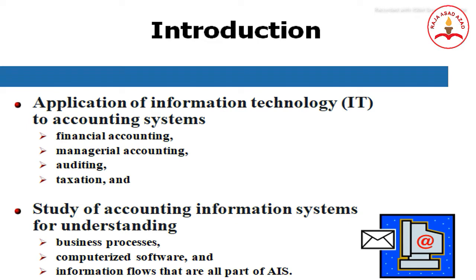The accounting information system summarizes data available to decision makers. By processing data, it influences organizational decisions at the lower, middle, and top levels of management. Applications of information technology to accounting include financial accounting, managerial accounting, auditing, and taxation. The study of AIS involves understanding business processes, computerized software, and information flows that are all part of the accounting information system.